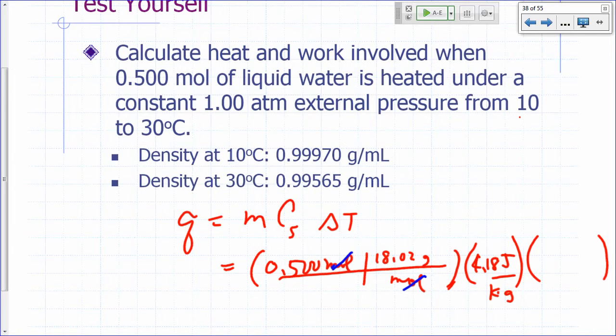Specific heat of water is 4.18 joules per Kelvin per gram. What's our delta T? From 10 to 30, so positive 20. Let's make this 3 sig figs there. 20.0 degrees Celsius, so positive 20.0 Kelvin.